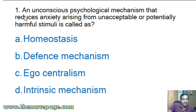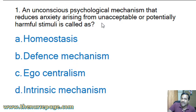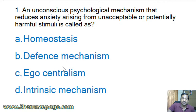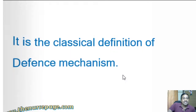First question: 'An unconscious psychological mechanism that reduces anxiety arising from unacceptable or potentially harmful stimuli is called as?' Options are: homeostasis, defense mechanism, ego centralism, intrinsic mechanism. The answer is defense mechanism — this is the classical definition of defense mechanism.